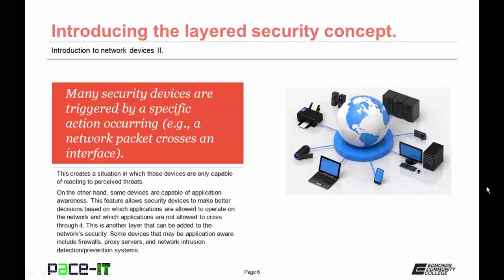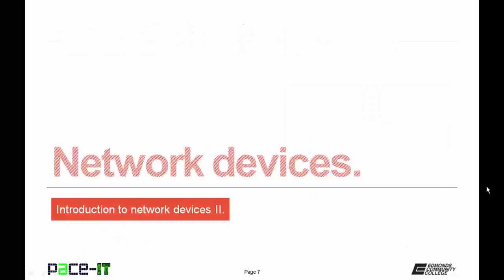Some devices that may be application aware include firewalls, proxy servers, and network intrusion detection systems or network intrusion prevention systems. With that, let's move on to some network devices.